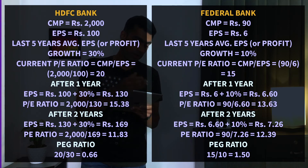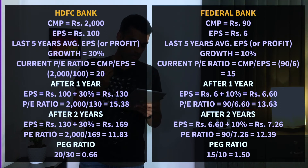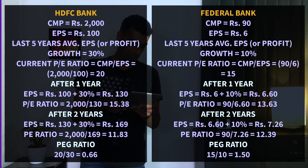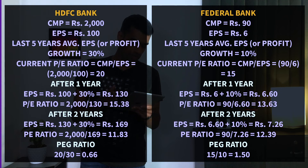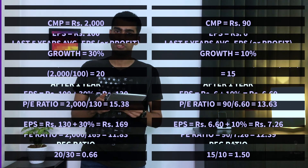The earnings growth for Federal Bank is around 30%, so the PEG ratio is 20 divided by 30, which is 0.66. For Federal Bank, the PE ratio is 15 and the earnings growth is 10%, so the PEG ratio is 15 divided by 10, which equals 1.5.